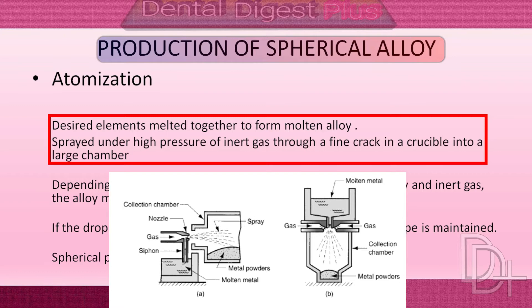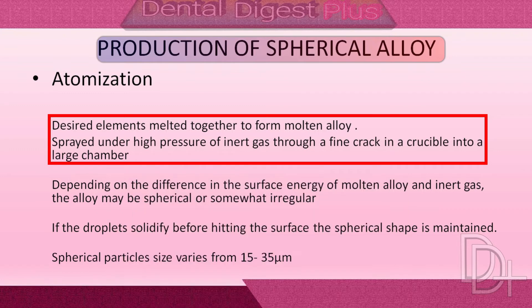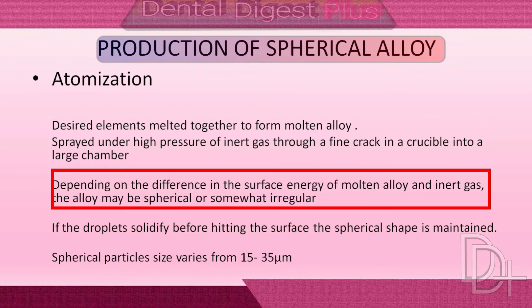After the liquid metal is sprayed under high pressure of inert gas through a fine crack in a crucible into a large chamber, if the droplets solidify before hitting the surface, the spherical shape is maintained. Depending on the difference in surface energy of the molten alloy and the inert gas, the alloy may be spherical or somewhat irregular.